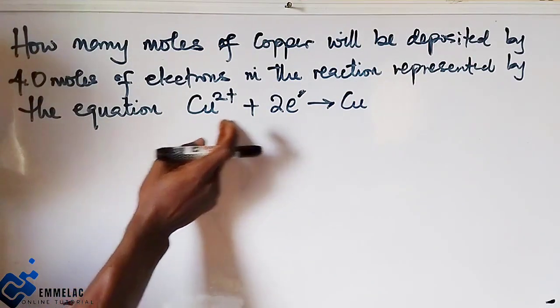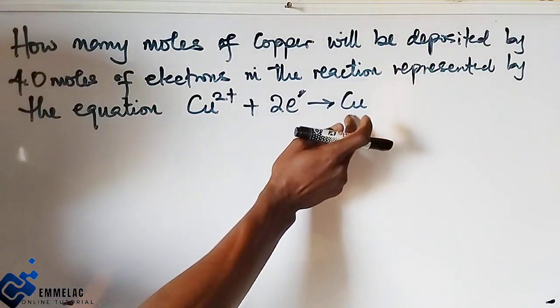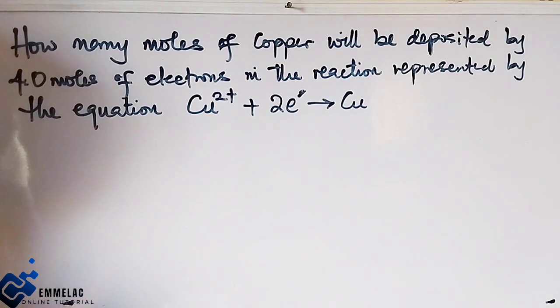Copper two ion gave out its two electrons to become a neutral state. So for us to get started.